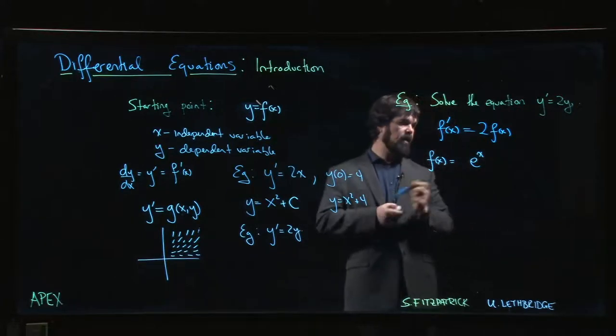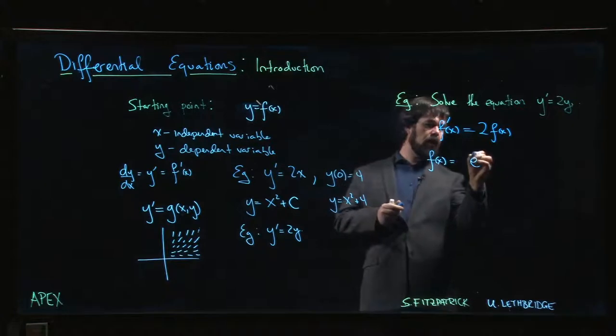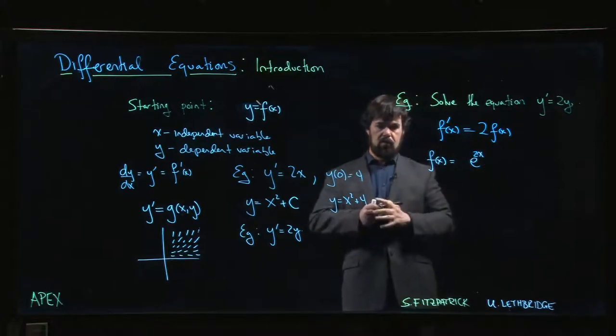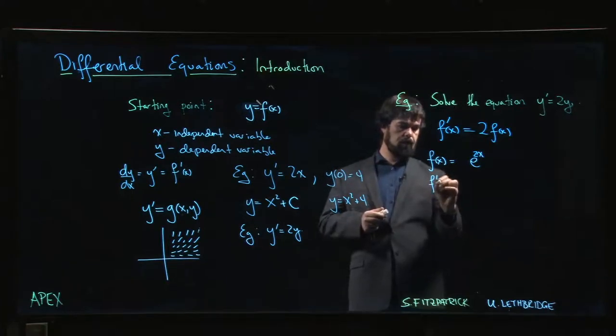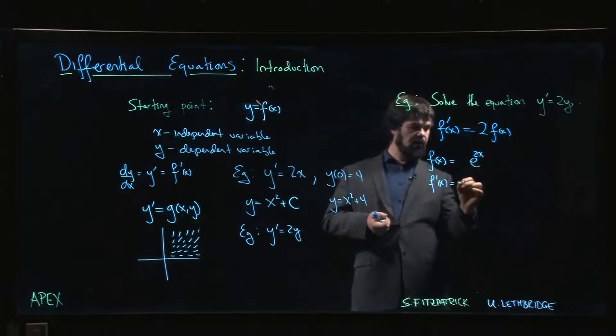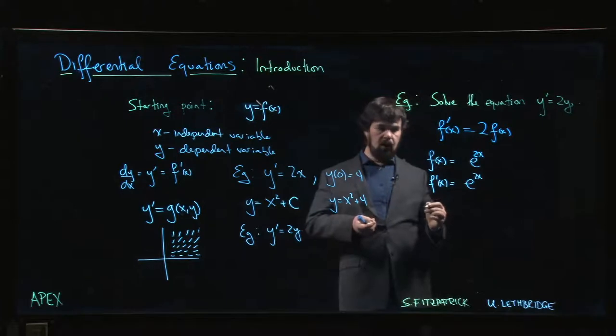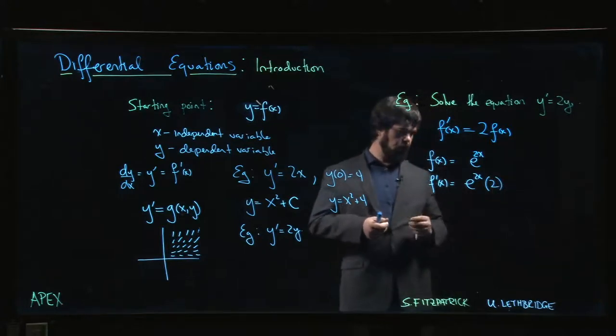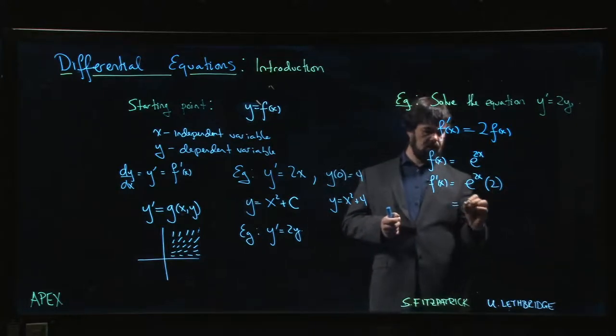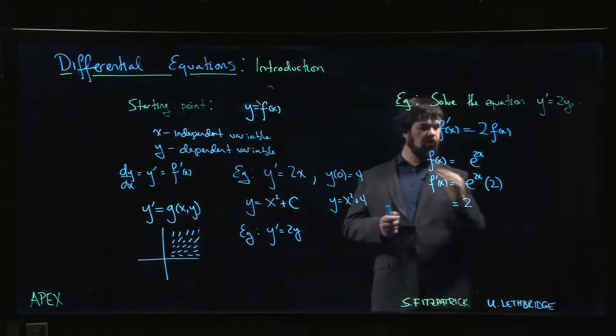Chain rule! If I had a two in there, if I had 2x, then when I calculate f'(x), I would get the derivative of the outside, which is the same thing because it's an exponential function—I get e^(2x). And then I have to multiply by the derivative of the inside, which is just 2. That is 2 times e^(2x), which is my original function.